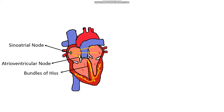This wave of depolarisation moves along the Purkinje fibres to finally cause depolarisation of our myocardial cells — the muscle cells of the heart — and causes ventricular contraction.